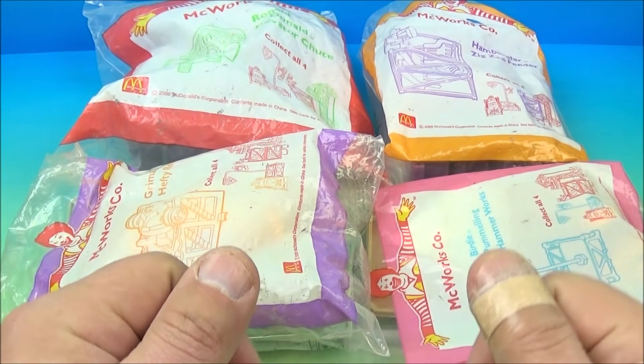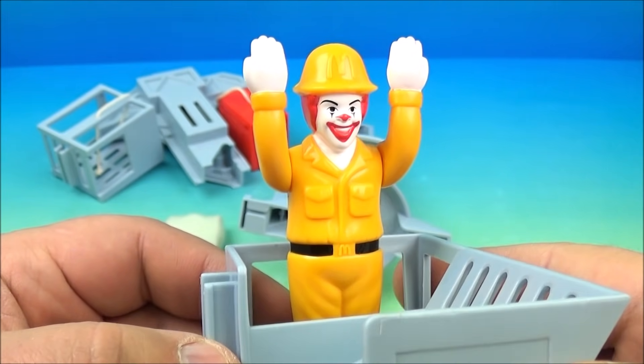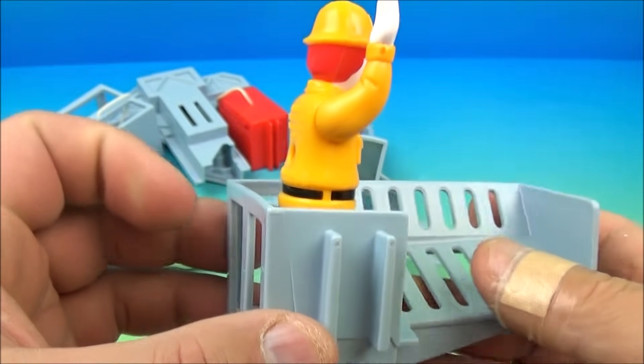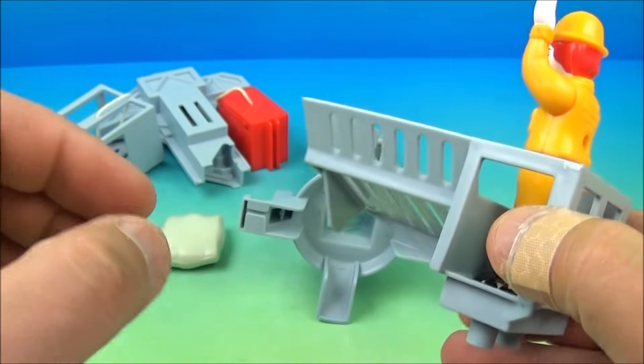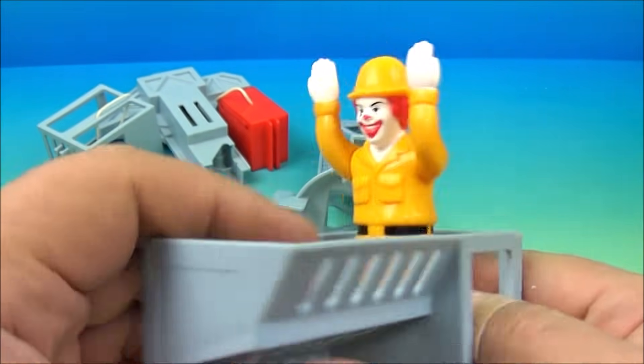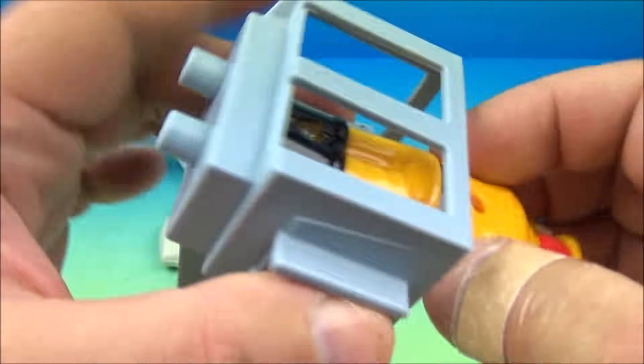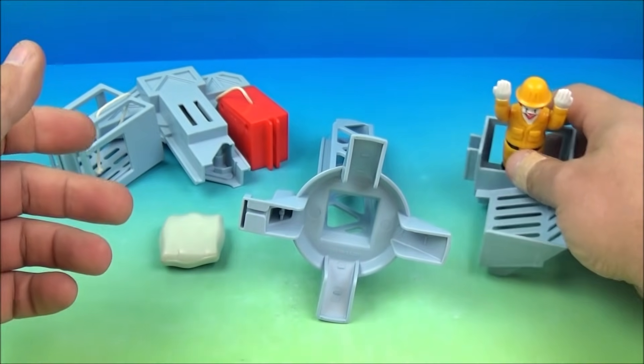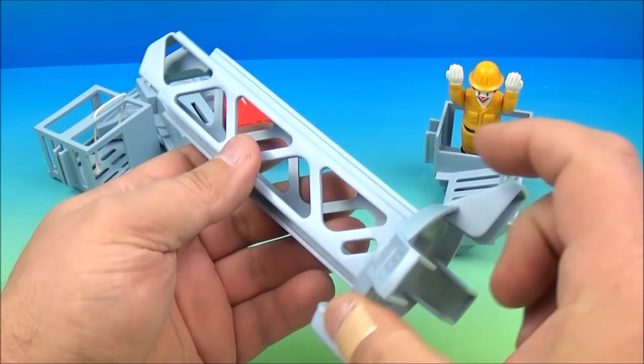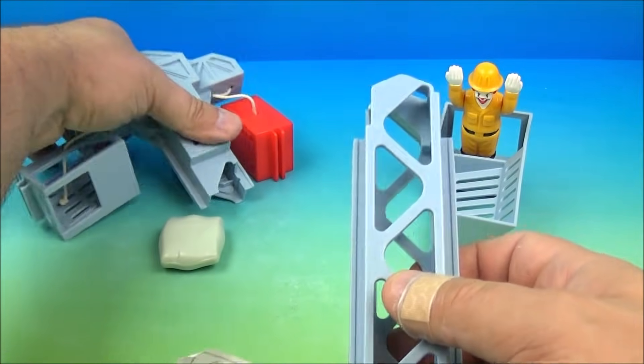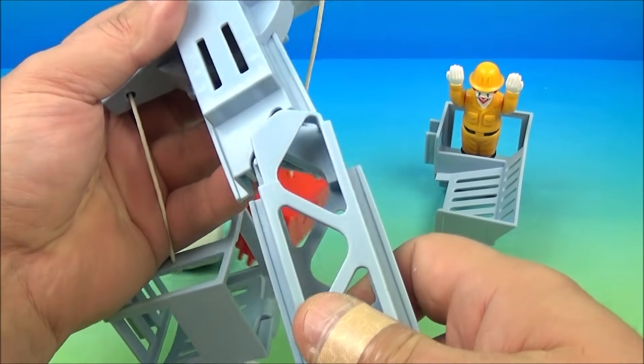Let's get them opened up and have a closer look. First up in the set is the Ronald McDonald elevator chute. Here is Ronald hanging out in this platform and there are four pieces all together and this one happens to have Ronald fastened to it so he's not removable. You can see he's screwed right on there and what you do is you take this part here which is actually the base and then there's a top part here and you plug these together.